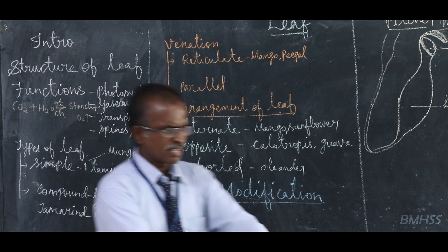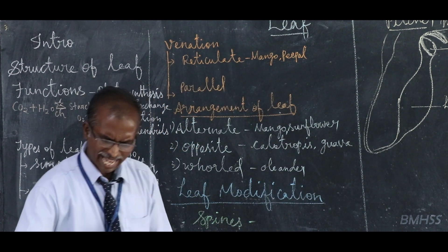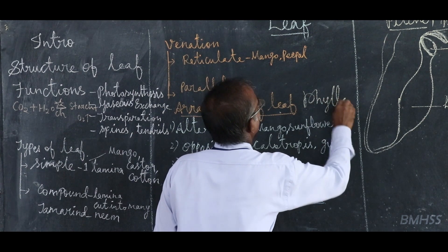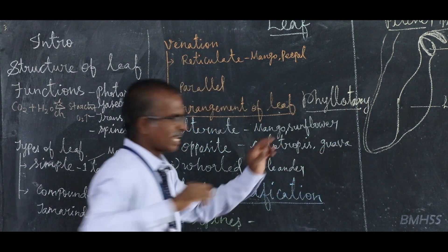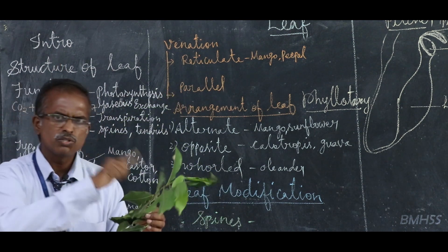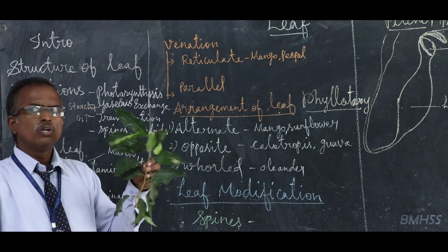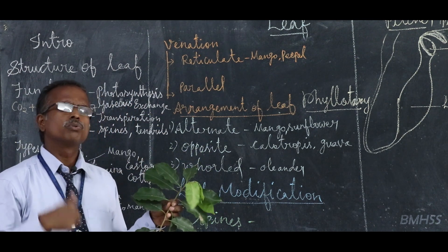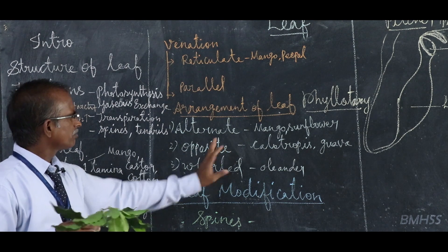Next, a very important term — phyllotaxy. What is meant by phyllotaxy? Philo means leaf. Phyllotaxy is the arrangement of leaves on the stem. This arrangement is generally to allow maximum exposure to sunlight, to absorb light and carry out photosynthesis. There are basically three types of arrangement of leaves seen in plants.